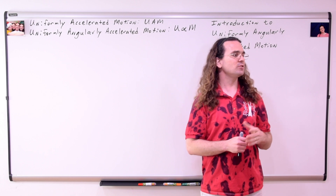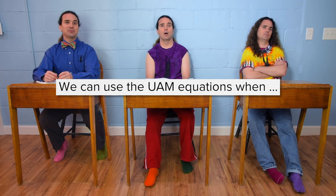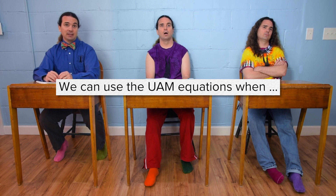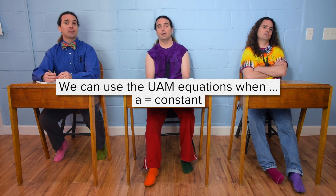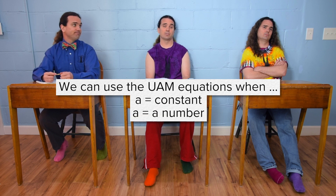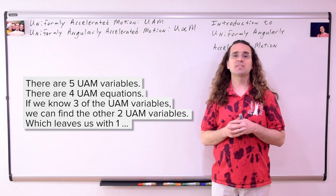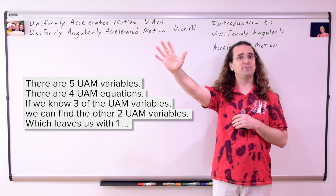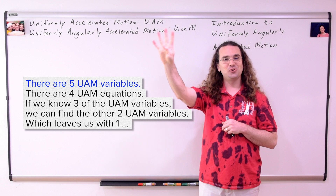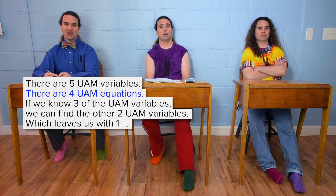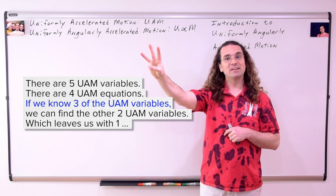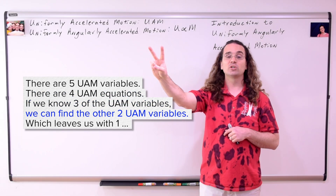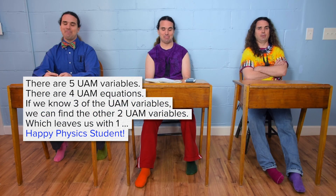Mr. P.: Billy, when can we use the UAM equations? Billy P.: We can use the Uniformly Accelerated Motion equations if the acceleration of the object is constant — that's what it means to be uniform. Mr. P.: In other words, the acceleration equals a number. Correct. Class, there are how many UAM variables? Five. There are how many UAM equations? Four. If we know how many of the UAM variables? Three. We can find the other? Two. Which leaves us with one happy physics student.